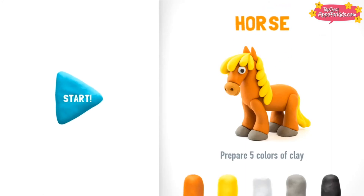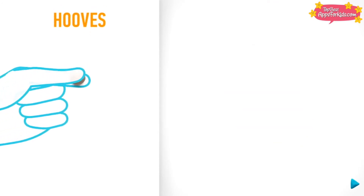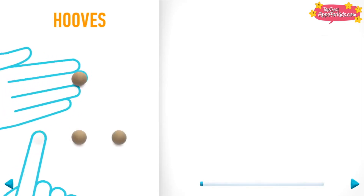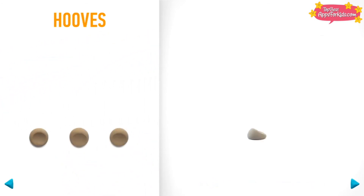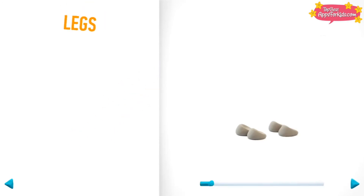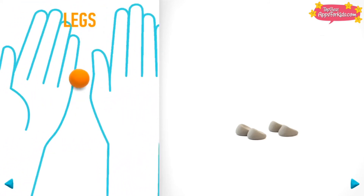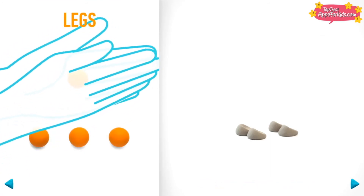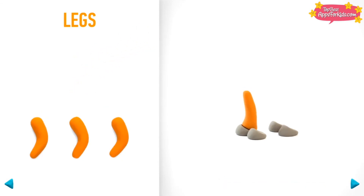Let's make a horse! Just follow this step-by-step instruction. First, we're going to make hooves. Take a piece of clay and roll four middle balls. Roll into a cone with your hands, then bend them with your fingers. Legs are done!